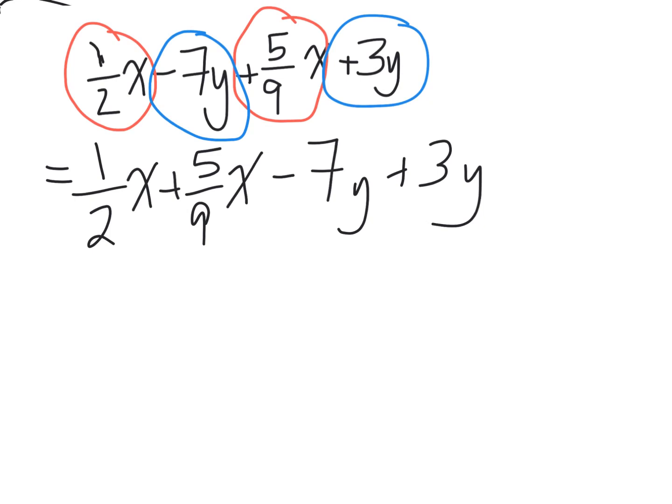So the tricky part is this fraction right here is not equivalent to this, and we're going to have to add our fractions, and to add fractions we have to make equivalent fractions. So what I'm going to do is I think of a number that I can multiply 2 and 9 by to make them equivalent.